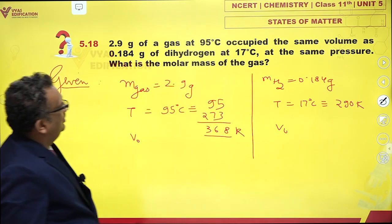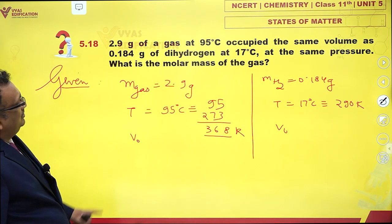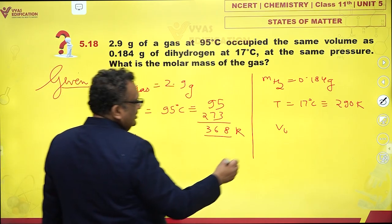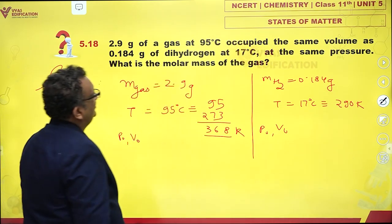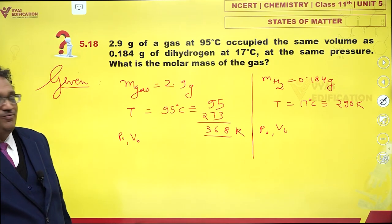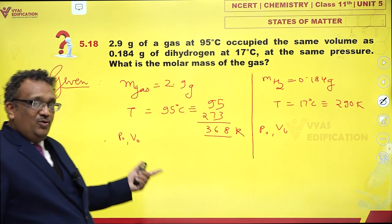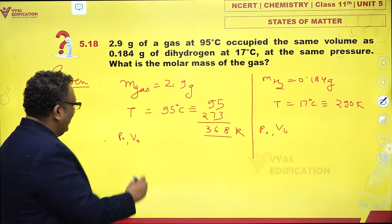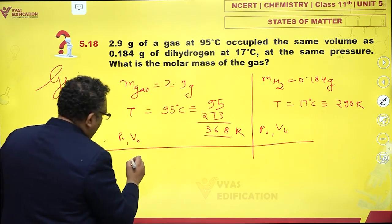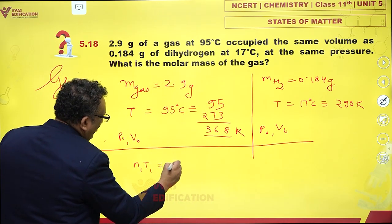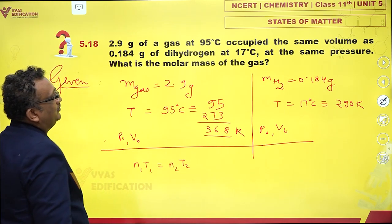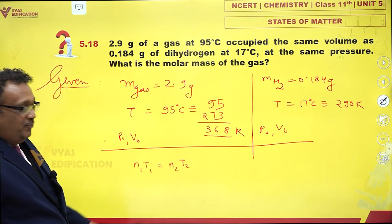At same pressure, pressure is same, volume is same. What is the molar mass of gas? Now PV is equal to nRT, so very conveniently I can say that n₁T₁ is equal to n₂T₂, right? Instead of moles...